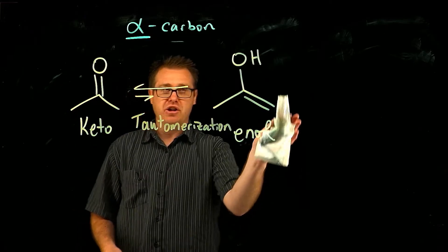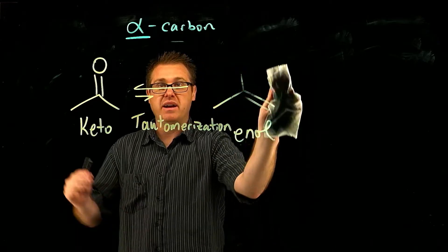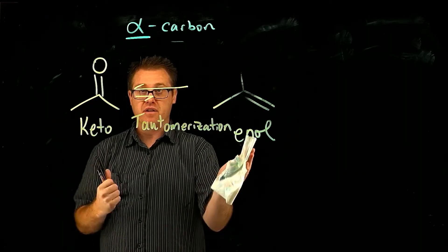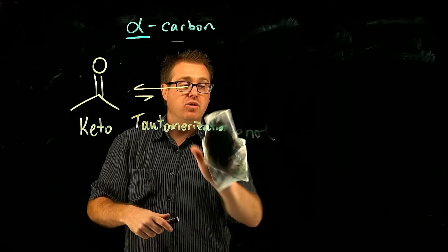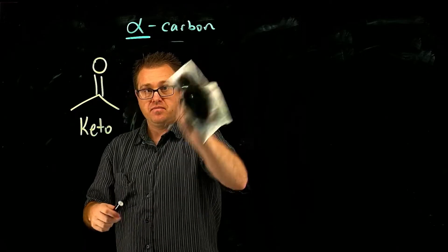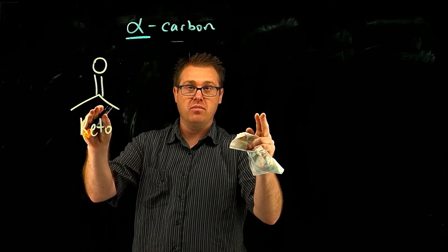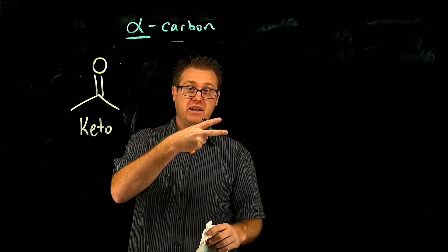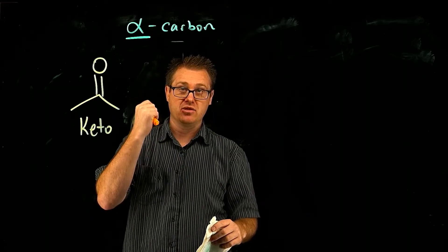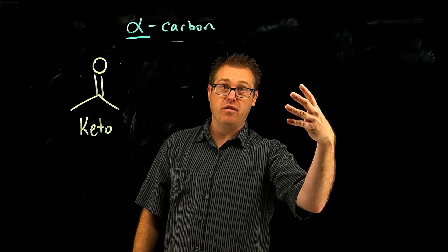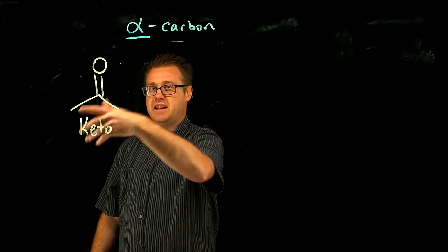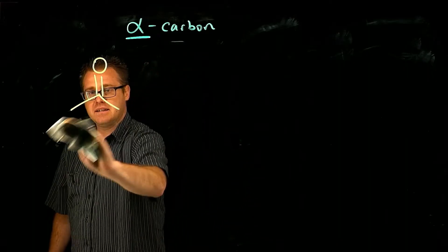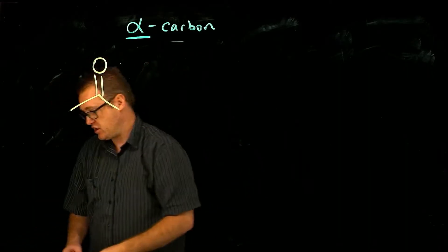Now this tautomerization can occur under acidic and basic conditions. And I want to show you how to do that. Now I'm going to show you under acidic and basic conditions, but in the forward direction. You need to understand that you have to do it in reverse as well. And so what you have here is the keto form and the enol form, but four ways, four mechanisms. Two in the forward direction with acid catalyzed or base catalyzed. And then in the enol form, going back to the keto form under acidic or basic conditions.